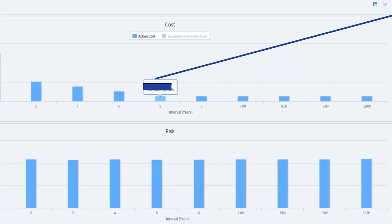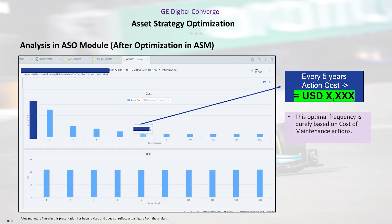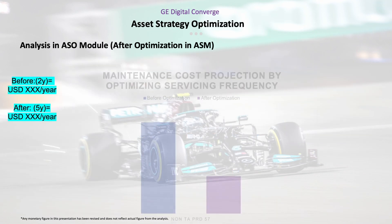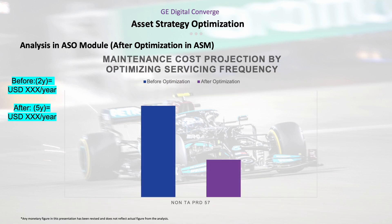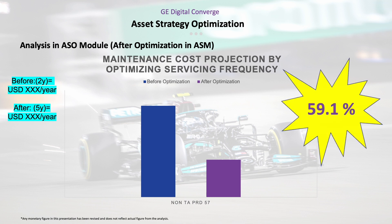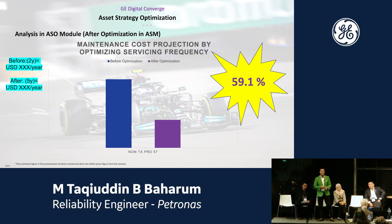This is the beauty of APM — it doesn't just consider cost, but also takes risk into account. With the optimal frequency and BM interval extended from two-yearly to five years, we achieved about 60% cost saving. This is what makes management happy, and GE is also happy with that figure.